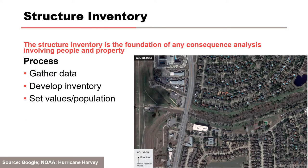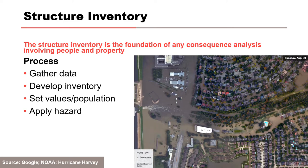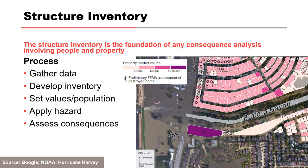Let's go through the process a little bit. Step one, you need to gather your data — that's the hard part, unless you have a ready-to-go dataset, but even then there are issues. You develop your inventory, set your values and your population. Once you've done that, you need to apply your hazard to that structure inventory to get a sense of what the depths are, the damages, and what the life loss could be. That's your consequence assessment piece.